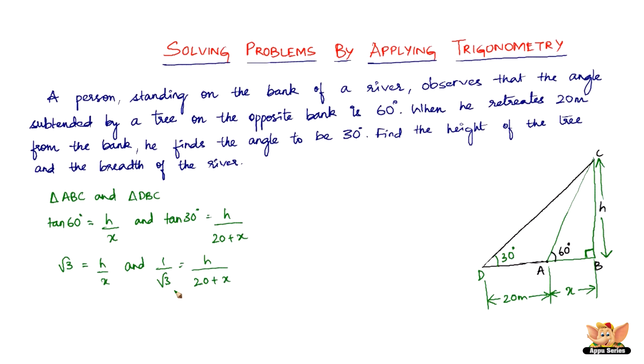Solving these two equations simultaneously should give us the answers. We've got h as x times root 3, and 20 plus x over root 3 equals h. So let's equate these two. We get x root 3 equals 20 plus x over root 3. Taking root 3 to the left hand side, we get 3x equals 20 plus x. So 3x minus x equals 20, giving us 2x equals 20, and x equals 10.